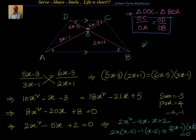So, that tells me that X equal to 2 or 1 by 2. You can cross check the values of 2 or 1 by 2 in this OC by OA equal to OD by OB and you will find out that LHS is equal to RHS.